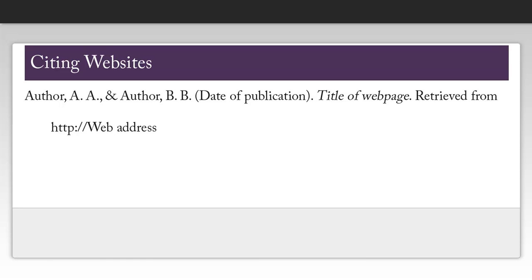The last citation example we're going to look at is for a website. This is probably the hardest type of citation to create because a lot of the information can be hard to find if it exists at all. It's important to keep in mind that if you can't find this information, it's hard to validate that you are in fact using a reliable source. What you want to look for is the name of the author or authors, the date that the information on the page was published, the title of the page you are actually on unless you're citing the entire website, and finally the link for the page.